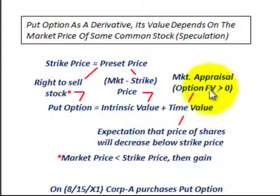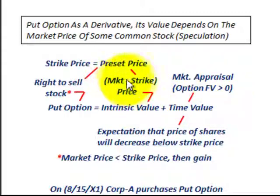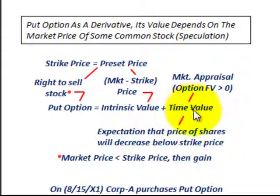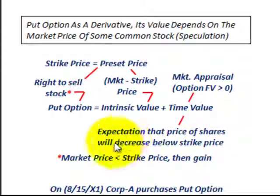That's where the option's fair value is greater than zero. That is, if the market price and the strike price were the same, then you'd have zero for your intrinsic value. But this option has some time value to it — that's really the expectation that the price of the shares of stock will decrease below the strike price.